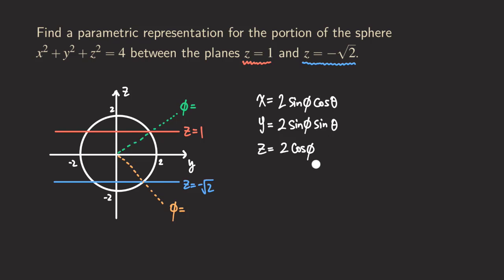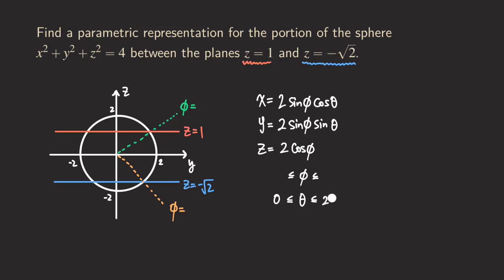The tricky part is figuring out the domain for the parameters. For the domain of phi, that is the most difficult part. Theta is actually the easy one — we are just going to cover all four quadrants, so theta goes from zero to two pi. The question is how do we figure out the limits for phi.